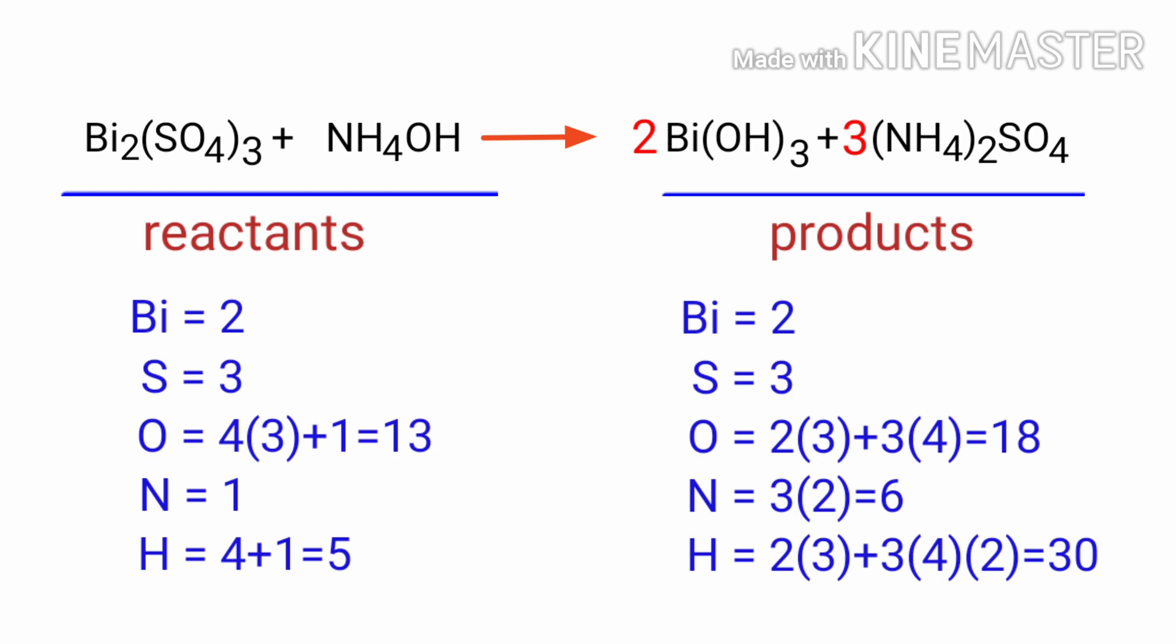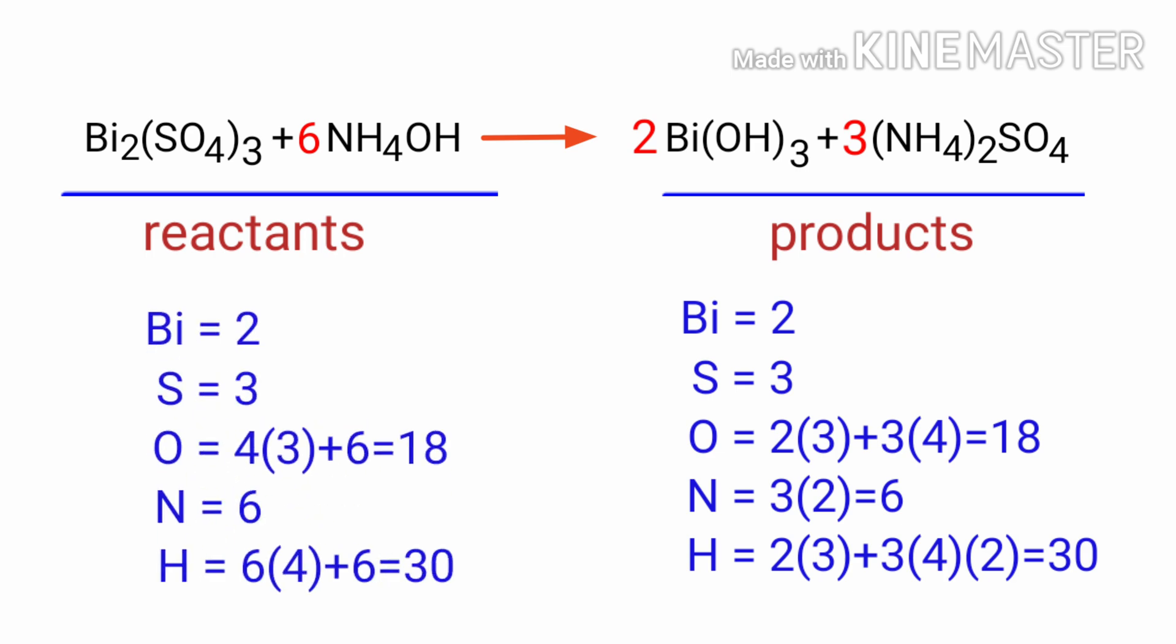Now we need to balance the nitrogen atoms. To do this we need to put a coefficient of 6 in front of NH₄OH. The equation is now balanced.